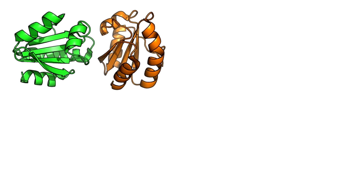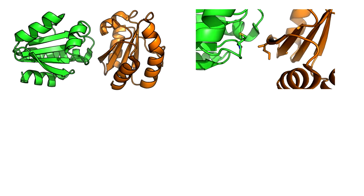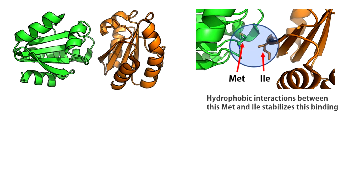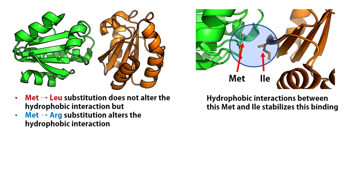Think of a protein complex. Hydrophobic interactions between a methionine and an isoleucine amino acid contribute most of the binding energy. In this case, a methionine to leucine substitution can have a very different impact on fitness compared to a methionine to arginine substitution. Methionine to leucine substitution conserves the hydrophobic interaction because both amino acids are highly hydrophobic in nature.